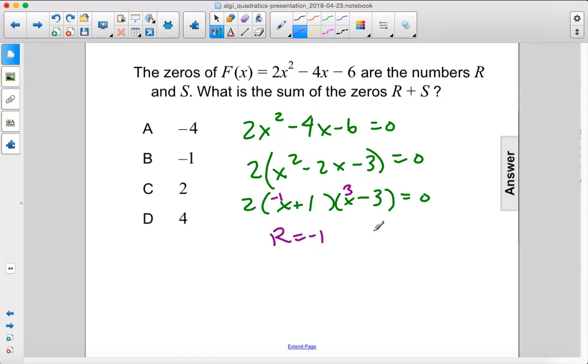So r equals negative 1. S equals 3. We could have switched them. S can be negative 1, r can be 3. It does not matter what order the zeros are in. But when we add r plus s, we get 2. The answer is C.